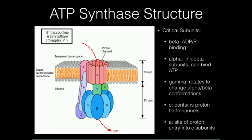The C subunits all contain what are called proton half channels. The protons are actually going to move into the C subunits, and then they're going to exit on the matrix side. When the protons move through the C subunit, that causes the gamma subunit to rotate. Now, the A subunit over here is actually the site of proton entry into the C subunits. When protons enter into the C subunits, the C subunits all spin, and that causes the gamma subunit to spin and sort of grind against the alpha and beta subunits.